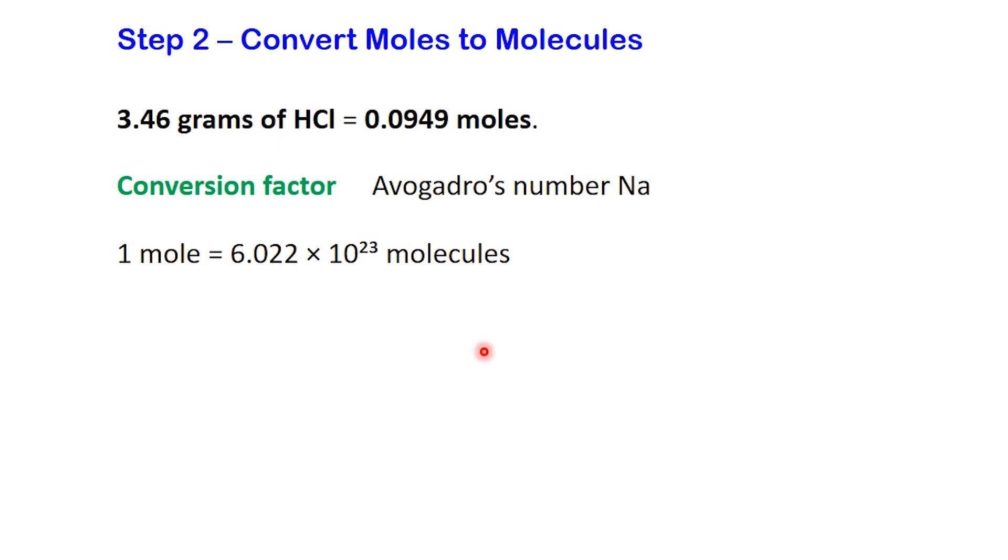So now comes the important question: Do we multiply or divide by Avogadro's number? Let's think carefully, and just like in step 1, we'll let the units guide us. We are starting with 0.0949 moles of HCl, and we want to find the number of molecules. So we write down the quantity we're starting with, 0.0949 moles. Then we multiply it by a fraction, just like before. Inside the fraction, we place the two values from our conversion factor: 1 mole and 6.022 times 10 to 23 molecules.